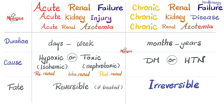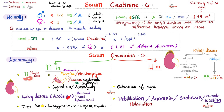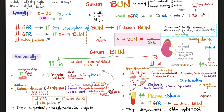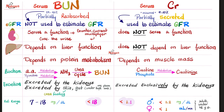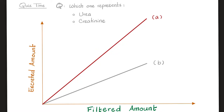If the kidney is failing, serum creatinine goes up and serum BUN (blood urea nitrogen) goes up as well. Normal BUN is less than 18 mg/dL; normal creatinine is less than 1.2 mg/dL. The average serum BUN is 15 and average creatinine is 1, giving a BUN-to-creatinine ratio of 15. BUN is partially reabsorbed because the kidney needs urea to concentrate urine, but creatinine is total waste and must be excreted.